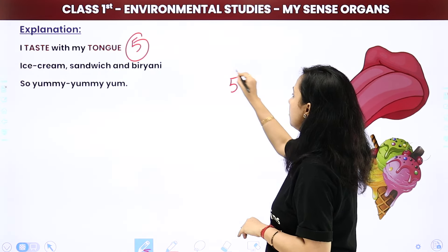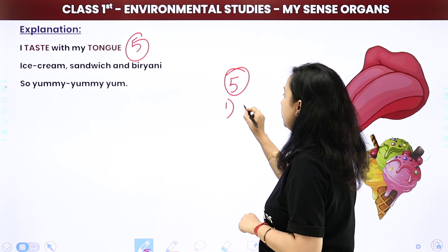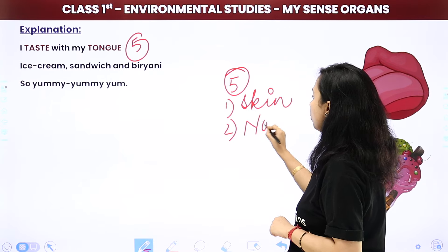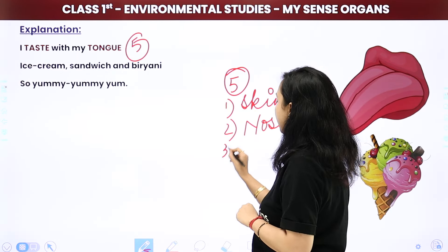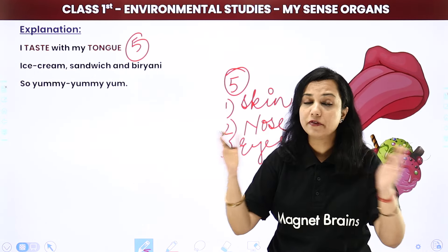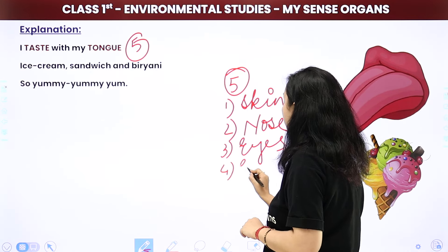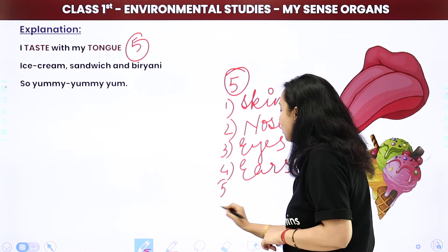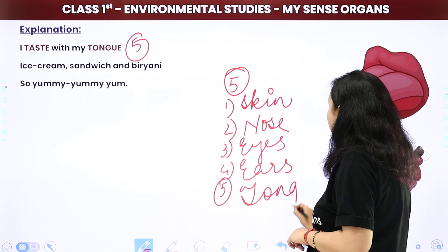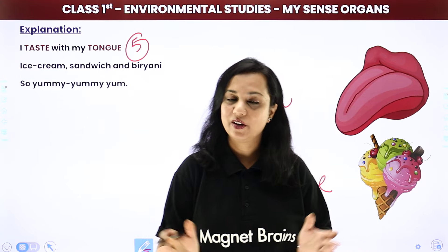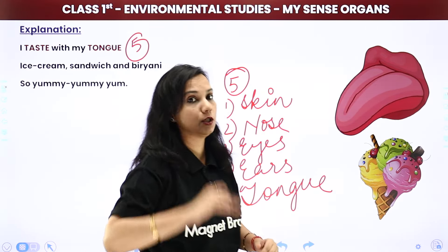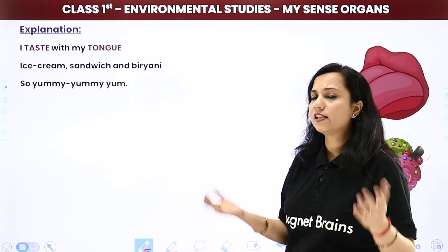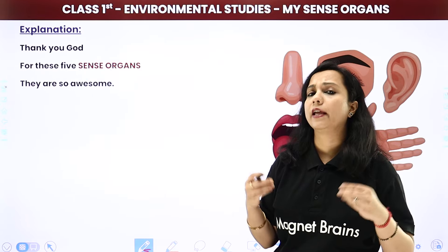So there are five sense organs children. Let's revise. First is your skin — skin kya karti hai? Touch karke feel karti hai. Doosra kya hai? Nose — nose helps in smelling. Tisra kya hai? Eyes — eyes helps to see everything around the world. Then fourth is your ears — ears kya karte hain? To help you hear. And the last one is your tongue — tongue helps you to taste food children, whether the food tastes yum or bad. So these are the five sense organs which are present in your body children. And these five sense organs are very, very important. Agar ye nahi hain, toh bahut saari activities nahi kar pao ge.